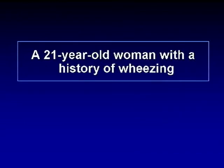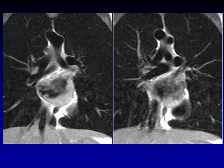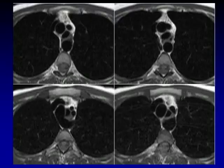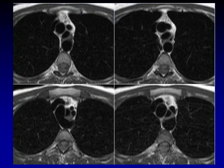Next case: 21-year-old woman with history of wheezing. These are coronal black blood images, and we also have some axial black blood images.